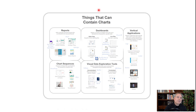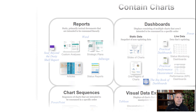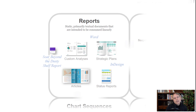Let's zoom into the next section of the map, called things that can contain charts. The advantage here is that it requires no explanation — it's things that can contain charts, like reports, dashboards, visual data exploration tools, and so on. Let's have a look at the first type: reports.